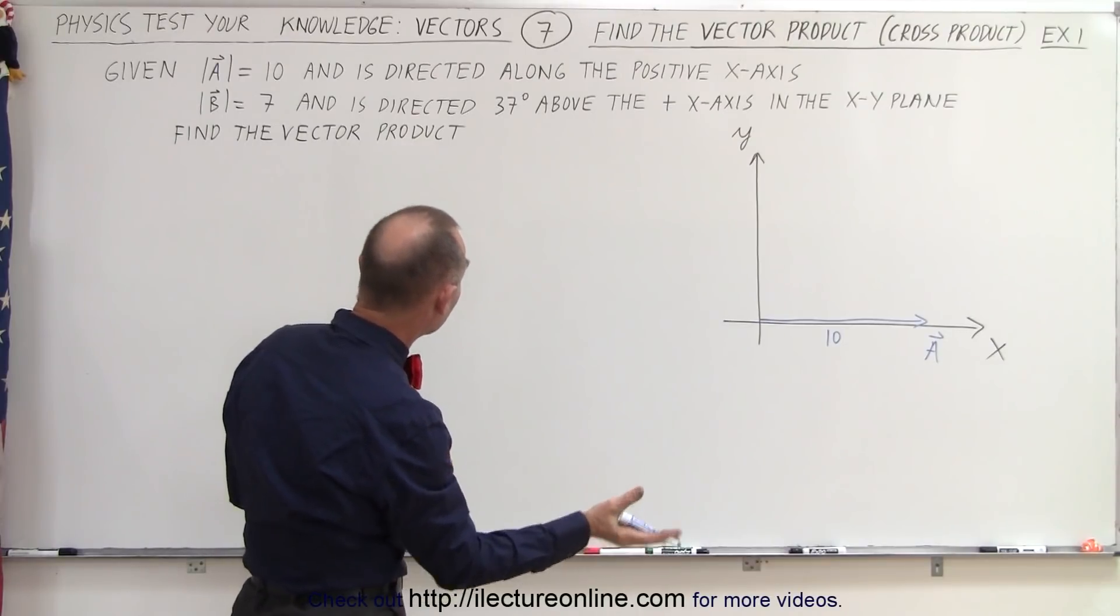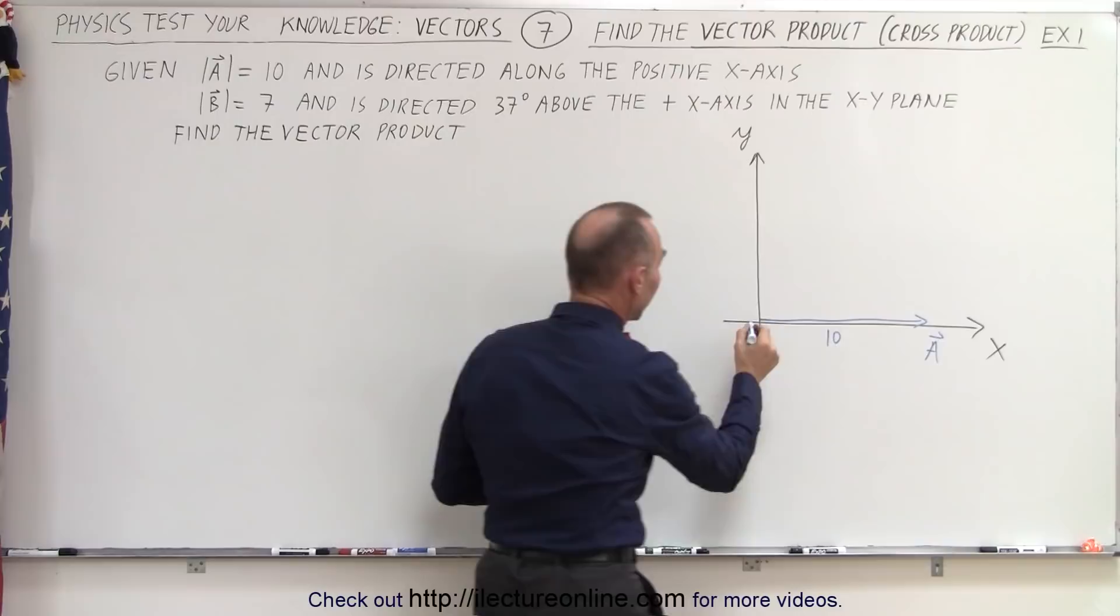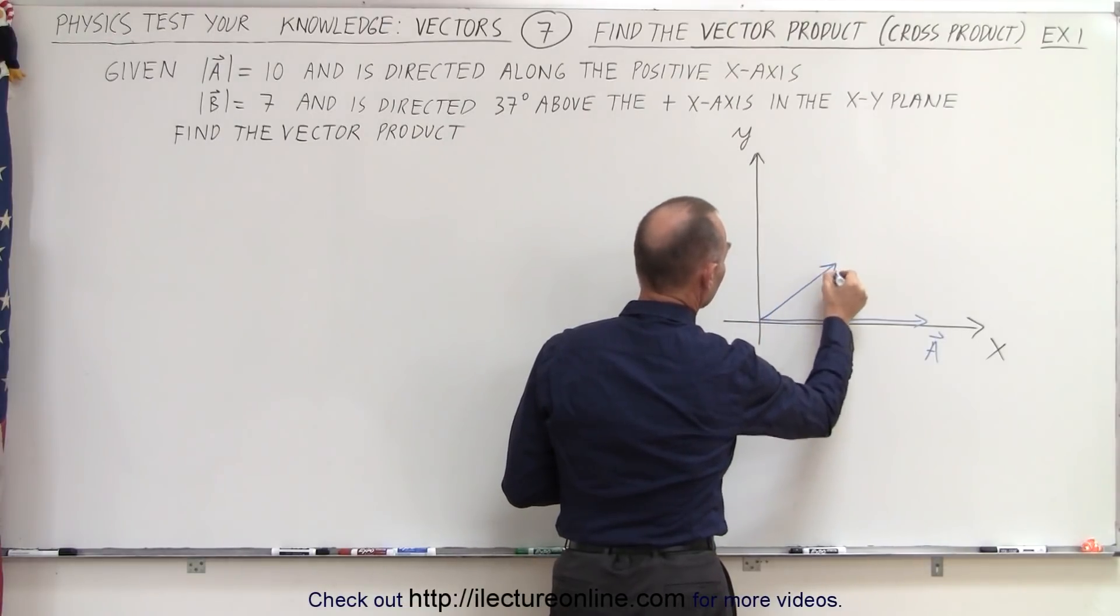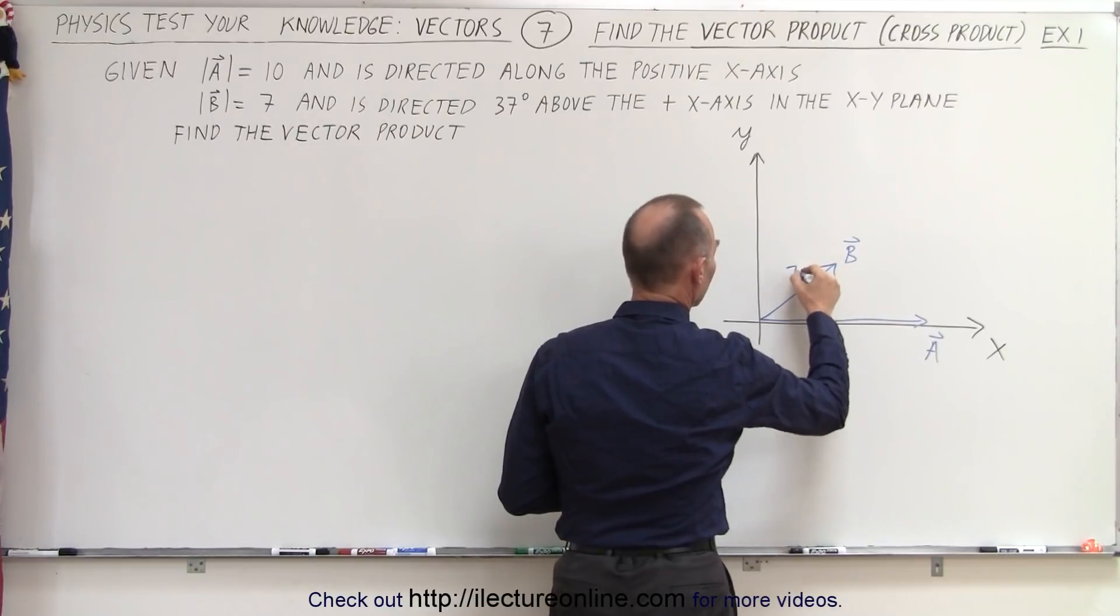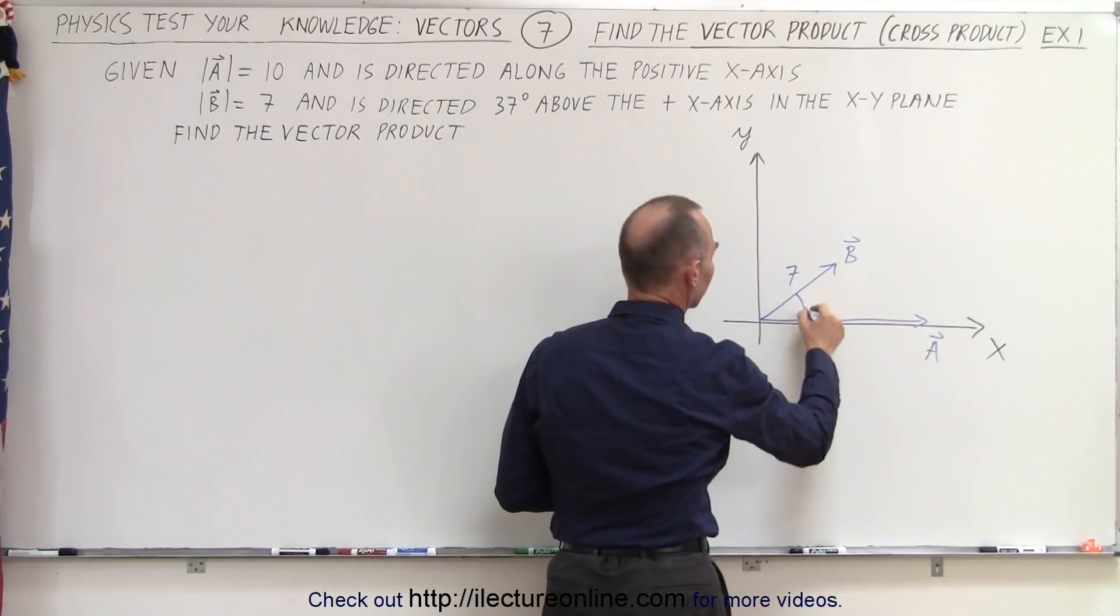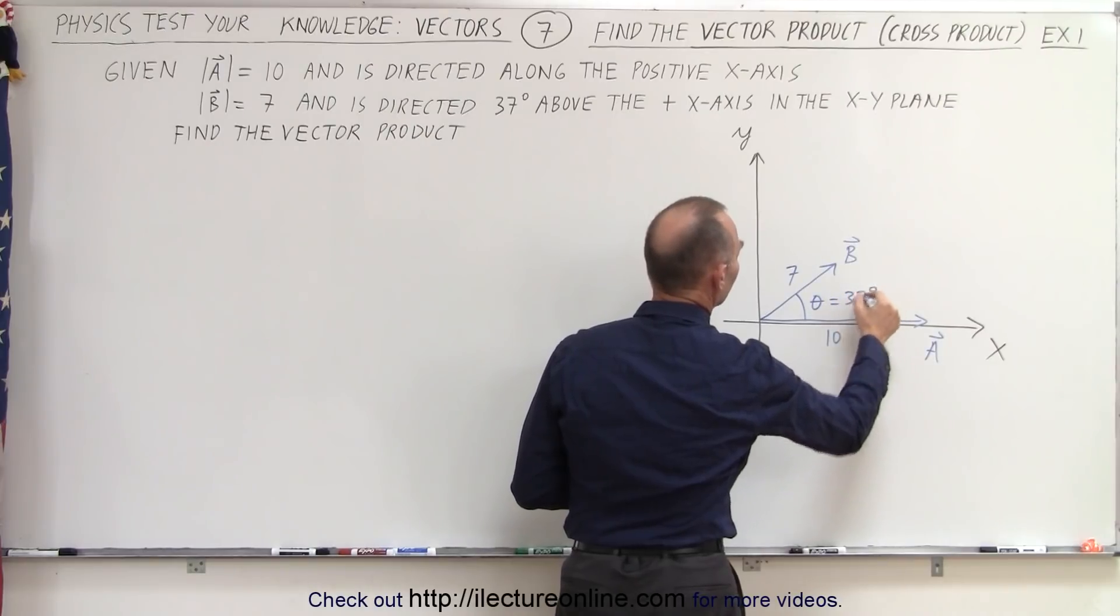A second vector, a little bit shorter, is directed at an angle of 37 degrees above that. This is vector B, it has a shorter magnitude, and the angle theta is equal to 37 degrees.